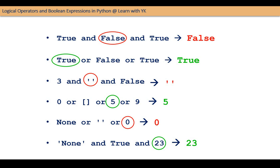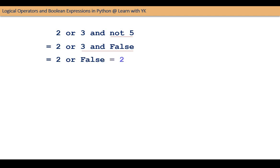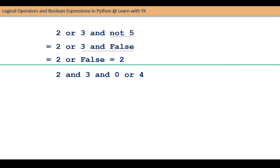Let us now see some more examples. In this expression, NOT 5 will be evaluated first. Because 5 is considered true, NOT 5 is false. So the expression becomes 2 OR 3 AND FALSE. 3 AND FALSE is false, and therefore the expression becomes 2 OR FALSE, which evaluates to 2. Now see the expression 2 AND 3 AND 0 OR 4. 2 AND 3 AND 0 is 0. Therefore the expression becomes 0 OR 4, which is equal to 4.